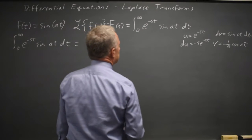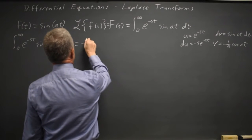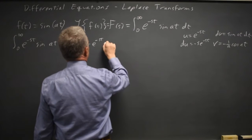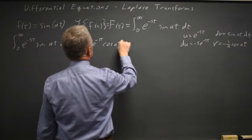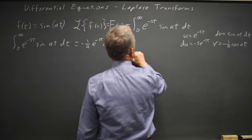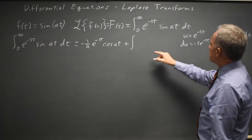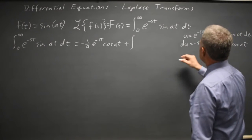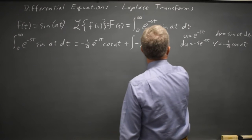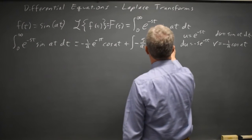So this is uv: negative 1 over a, e to the negative st, cosine at, plus the integral. It's minus the integral of v du, and that minus gives us negative s over a, e to the negative st, cosine at.